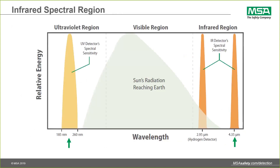This slide shows that optical flame detectors in good working order will not respond to the sun. You can see the sun's radiation reaching the earth. Other than a little bit of intersection on the 2.5 micron frequency — which is tuned out — the detector in good working order will not respond to the sun, because the radiation levels just are insufficient or don't even intersect the spectral sensitivity wavelengths that we're measuring.